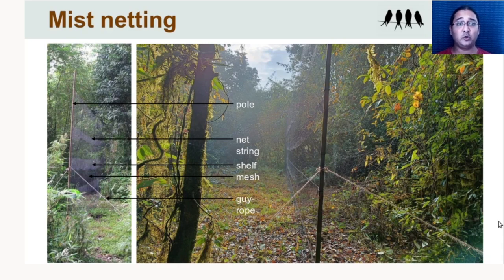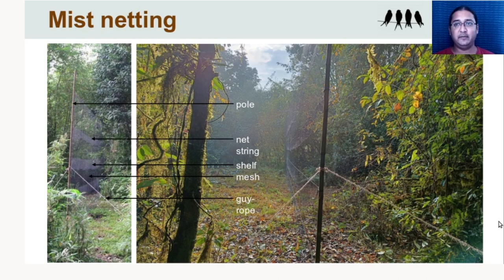These particular nets are 12 meters long and two and a half meters high, attached to poles at two ends and anchored to the ground with guy ropes. Each net has a mesh size of 16 millimeters — every mesh is 16 millimeters square. Some parts of the net sag down to form shelves, so birds can't see these mist nets clearly against a background of vegetation and fly into them, getting captured within the nets.